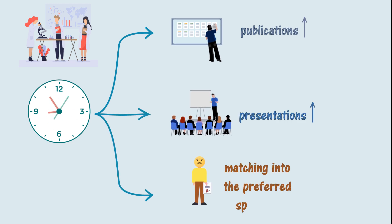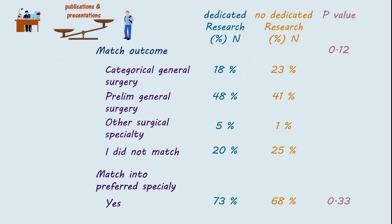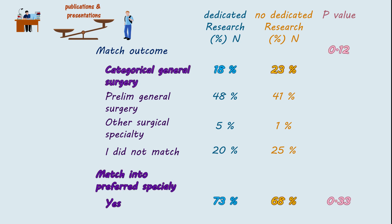Spending more time in research led to more publications and presentations, but was not associated with matching into the preferred specialty. Although the dedicated research time group had more publications and presentations, they did not have better chances of matching into their preferred specialty or categorical general surgery.